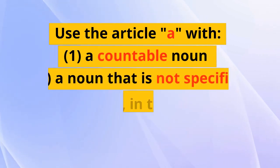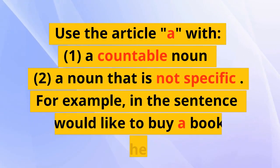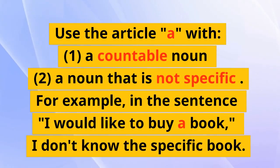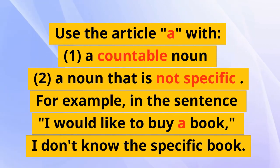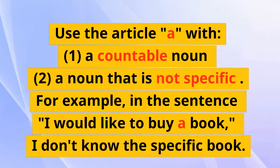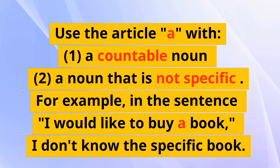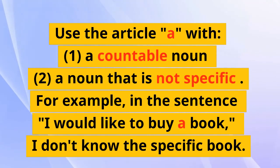Use the article 'a' with: one, a countable noun; two, a noun that is not specific. For example, in this sentence — 'I would like to buy a book' — I don't know the specific book.